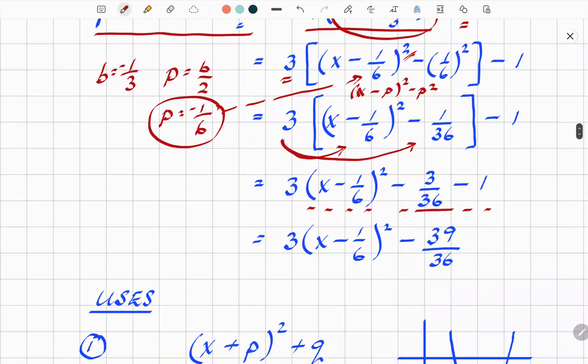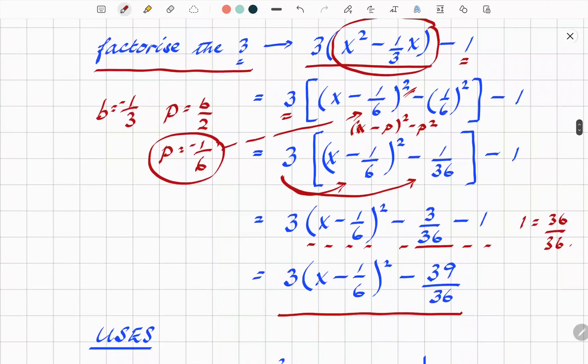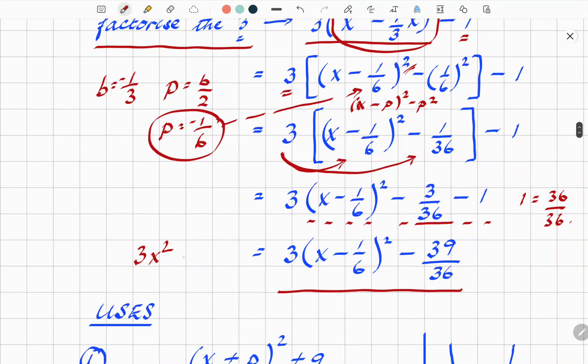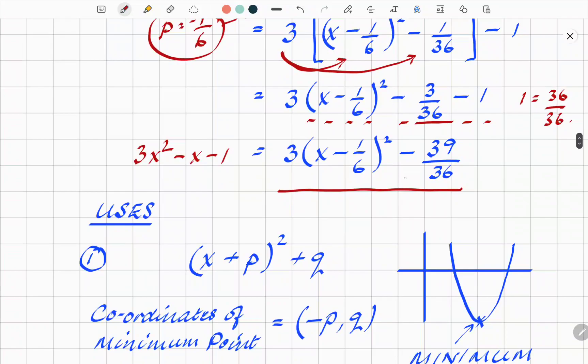Putting that all together, and I'm assuming you know your fractions, 1 can be written as 36/36. So -3 - 36 is -39 over 36. That is the completed square form of that original quadratic. And just to remind you what we started with, 3x² - x - 1. Those two expressions are absolutely equivalent. They mean exactly the same thing.